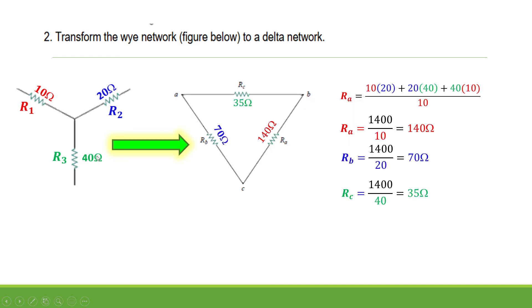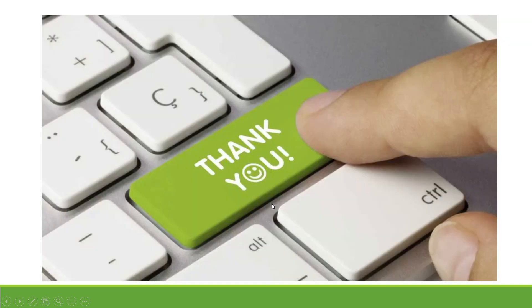So from Y network, we convert it to Delta. R sub A is 140 Ohms, R sub B is 70 Ohms, and R sub C is 35 Ohms.